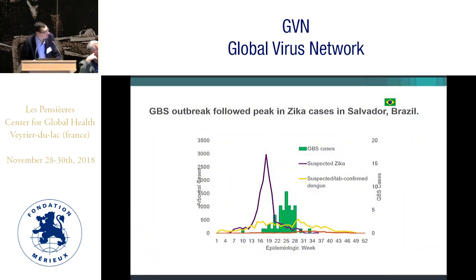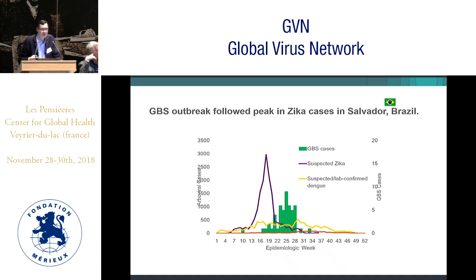This epidemiologic curve from a case-control investigation we conducted in Salvador, Brazil shows the estimated incidence of suspected Zika juxtaposed on the incidence of Guillain-Barré syndrome. You can see that as Zika cases go up, the incidence of Guillain-Barré syndrome goes up, and as incidence comes down, so does Guillain-Barré syndrome incidence. This interval of two to three weeks is consistent with an antigenic stimulus causing this autoimmune condition, and the burden of epidemiologic evidence suggests a causal association between Zika and Guillain-Barré syndrome.